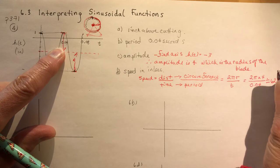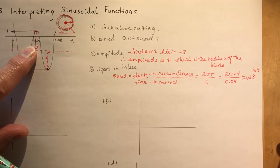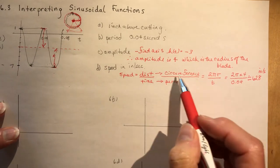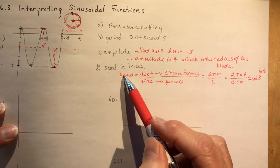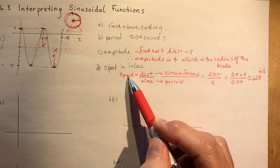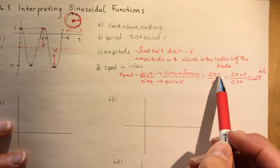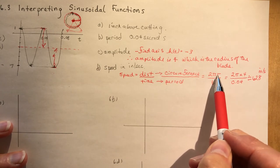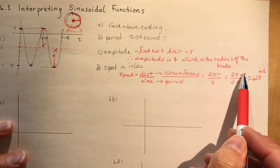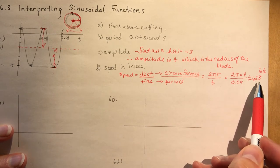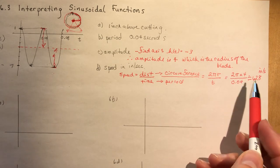We're running out of room. And I'm off the page almost. So when you're asked to find the speed or how fast something is turning, you need to know the circumference, which means you need the radius. And the radius is the amplitude. So 2 pi r divided by time, and that gives you the speed in meters per second.